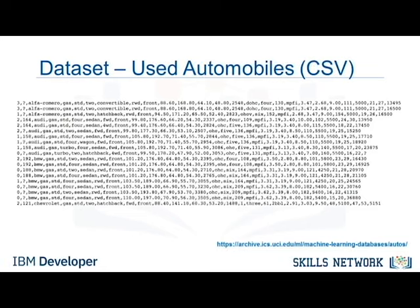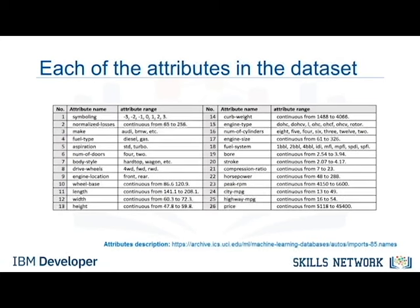Do you notice anything different about the first row? Sometimes the first row is a header which contains a column name for each of the 26 columns, but in this example it's just another row of data. So here's the documentation on what each of the 26 columns represent. There are a lot of columns, and I'll just go through a few of the column names.